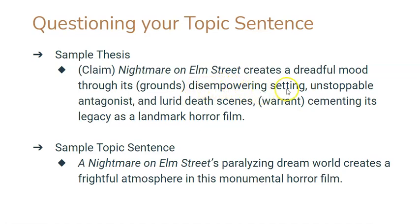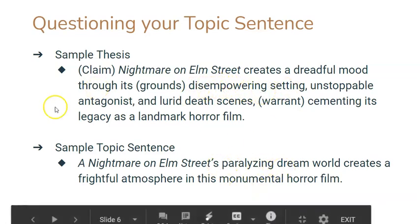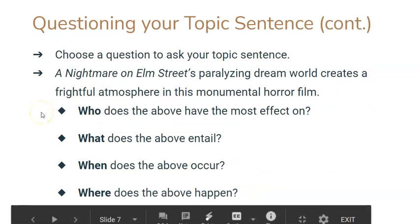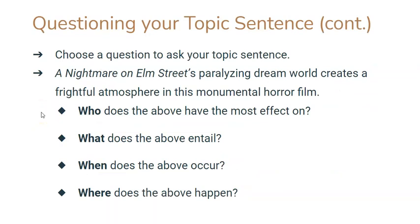We're focusing on the disempowering setting — the paralyzing dream world. So we ask our topic sentence a question using who, what, when, and where. For example: 'A paralyzing dream world creates a frightful atmosphere in this monumental horror film.'